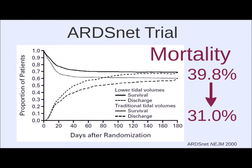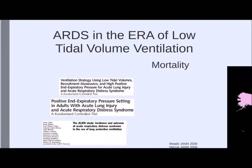Those earlier trials were smaller and couldn't establish a difference until the comparison was 6 vs. 12 cc/kg — a pretty big jump. The ARDSnet trial quotes 12 cc/kg as the standard of care prior to the trial, but that's not quite true — generally 8 or 10 cc/kg was considered standard. Even authors on the ARDSnet trial have published papers saying 10 cc/kg was standard. Some ethical articles have questioned whether the trial was performed in good faith when it stated 12 cc/kg as standard.